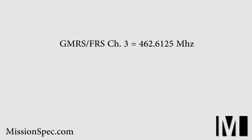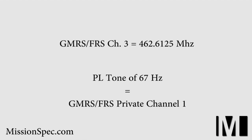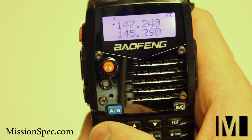You are now transmitting and receiving at 462.6125 MHz with a PL tone of 67 Hz. This corresponds with GMRS FRS Channel 3, Sub Channel 1. The Dual Standby option allows you to listen to two independent frequencies at once. All settings between the two frequencies are independent, meaning you will need to set PL tones — both transmit and receive — on both frequencies.